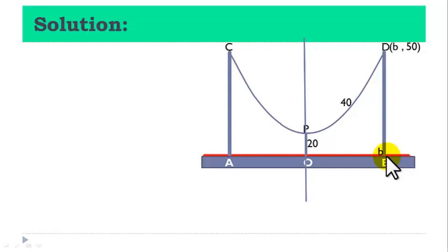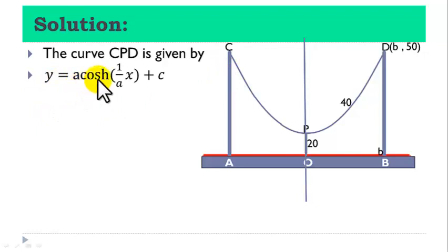Now, to solve this problem, first we have to obtain the Cartesian equation of this curve CPD. The general Cartesian equation of this curve is given by y equals a cosh of x over a plus c, where a and c are constants.